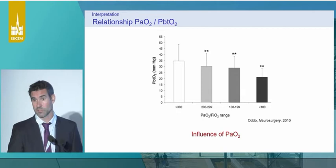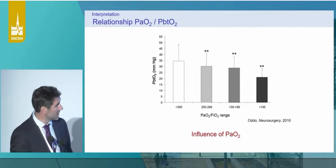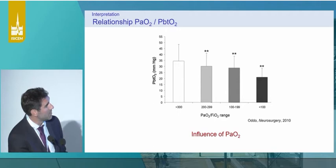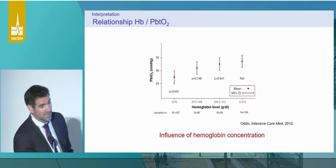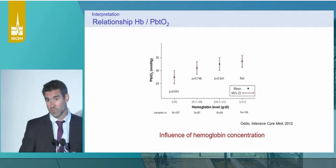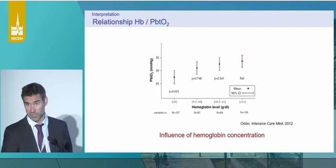PaO2 clearly has an influence on PbtO2, as demonstrated by several studies. In this retrospective study from the University of Pennsylvania, you can see that according to different PaO2 and FiO2 ranges, there is a drop in PbtO2 when the PaO2/FiO2 ratio goes down. Similarly for hemoglobin concentration — below 9 grams per deciliter, you have a drop in PbtO2. So arterial oxygen content is obviously an important factor in interpreting PbtO2. But diffusion is also an important parameter — the only way to move oxygen from capillaries to brain tissue is the oxygen tension gradient from the capillary to the cell.